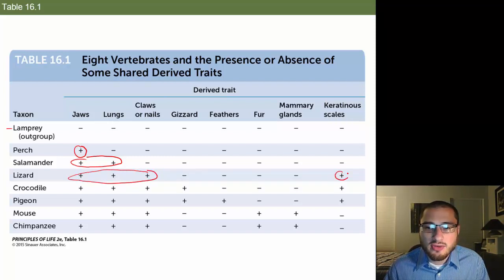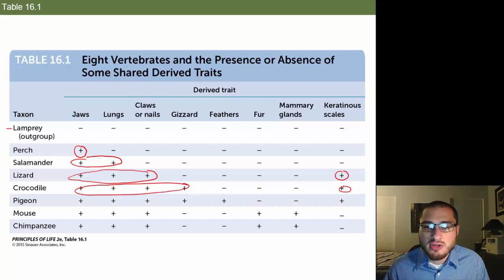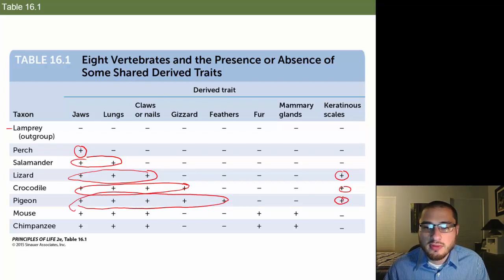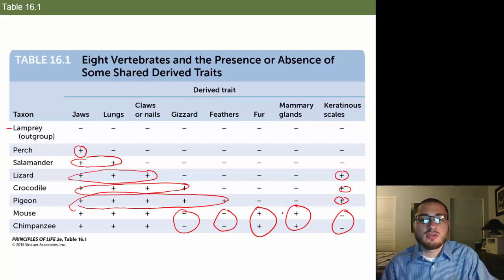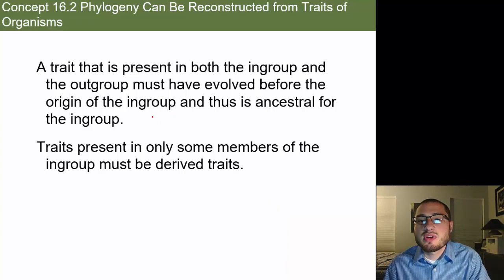The lizard also has scales, and you can see that the lizard and the crocodile must be pretty closely related because they share all these traits, separated only by the gizzard. Then you have the pigeon, which is very similar but now has feathers — so these branching events continue. When you get to the mouse and the chimpanzee, something happened where they lost some traits, but they must be closely related to each other because they have new traits going on.